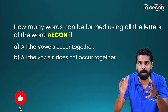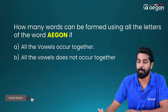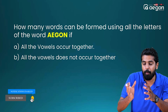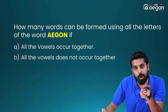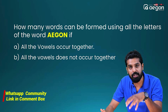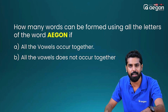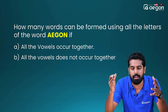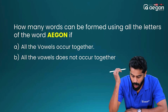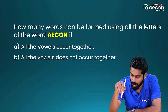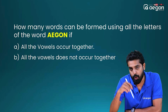we know one question about a word. These are the questions in the permutation and combination chapter that we can ask in board exams and entrance exams. The question is: how many words can be formed using all the letters of the word AIGAN if all the vowels occur together?